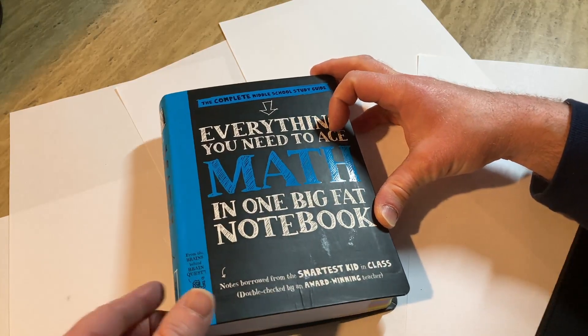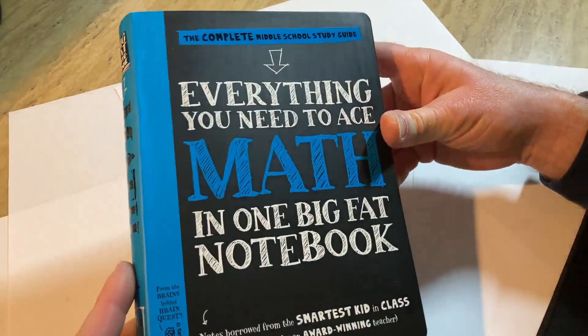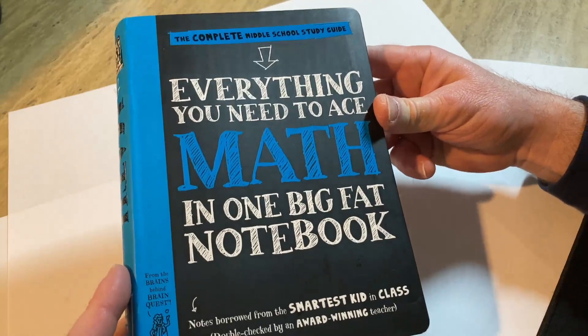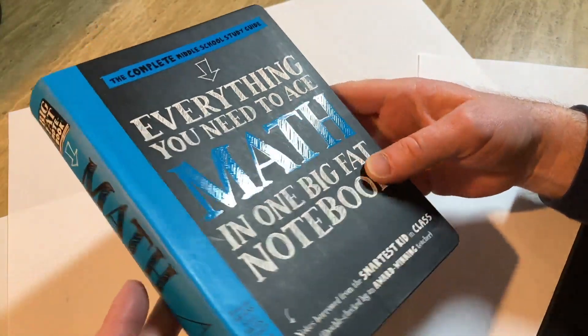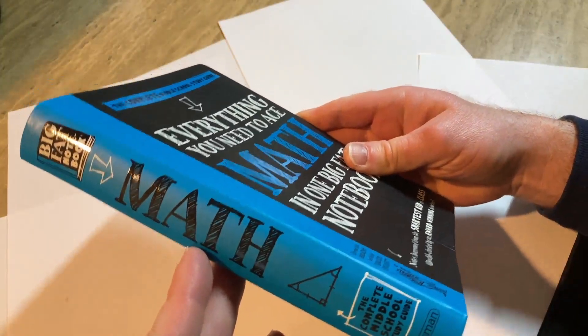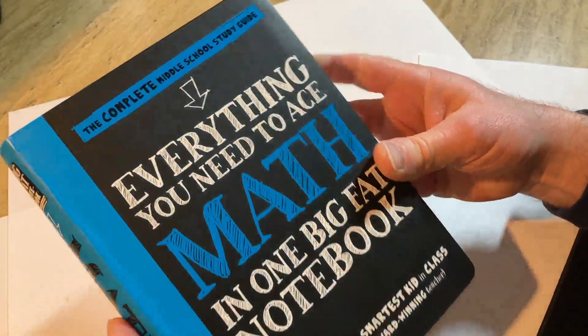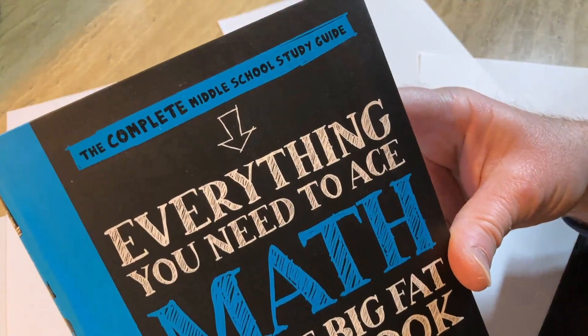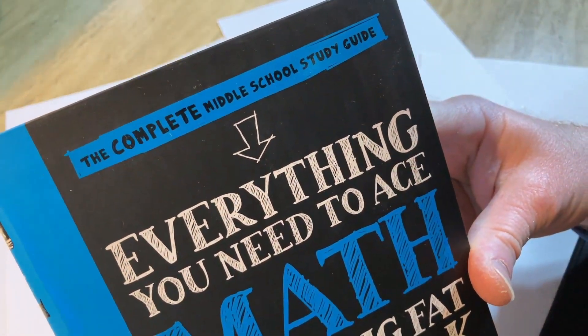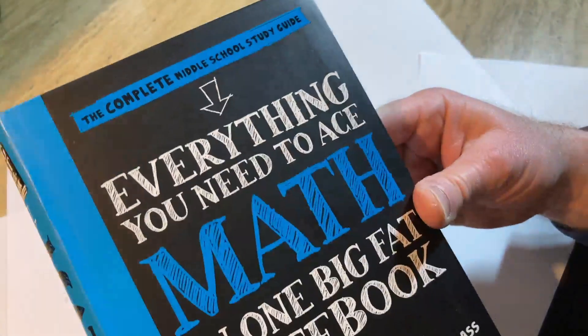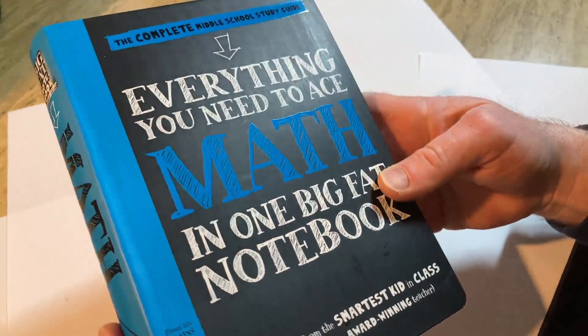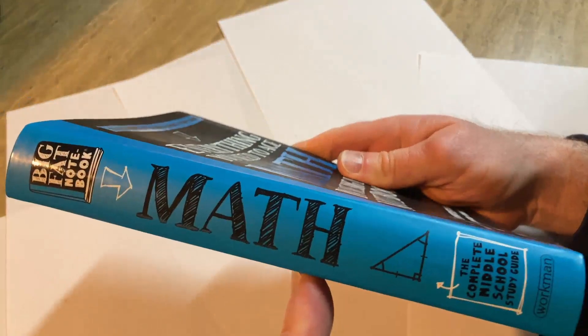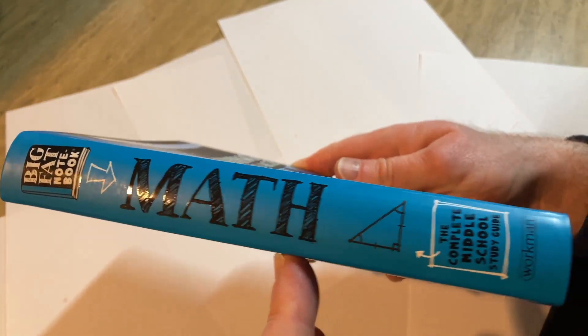This book is a really good example of a modern textbook that you can buy, that's quite affordable, that teaches you math from the very beginning. This book is actually targeted towards middle school students. It's called the complete middle school study guide, everything you need to ace math in one big fat notebook. So don't let the gimmicky title turn you off. This is a great book.